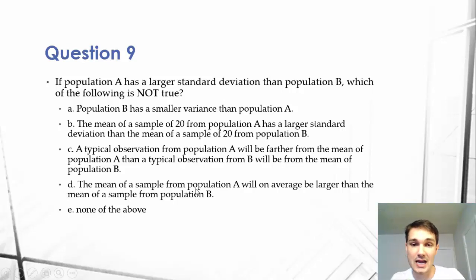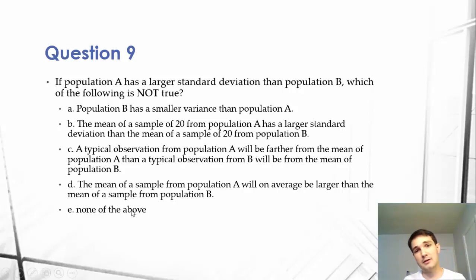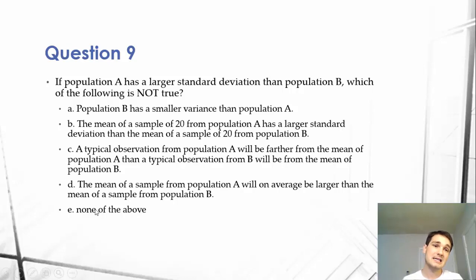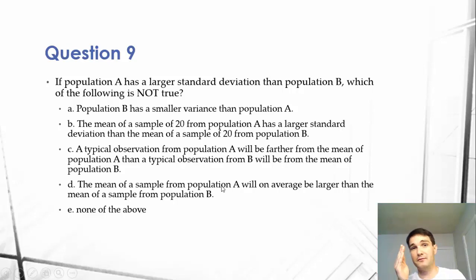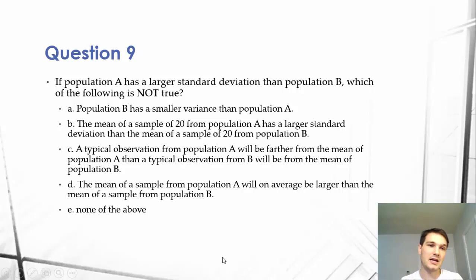If you understand A, B, and C as definitions of standard deviation and why these are correct, you should be golden. That leaves us with D: the mean of a sample from population A will on average be larger than the mean of a sample from population B. If A's standard deviation is larger, it changes the disbursement of data, but it has nothing to do with the mean. The mean is not changed by the standard deviation. So D is not true — this is our answer.